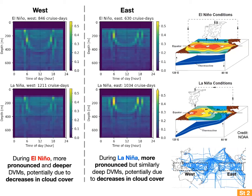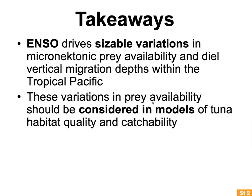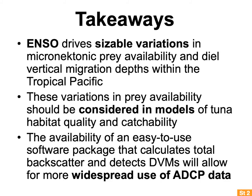In the eastern tropical Pacific, during La Niña, more pronounced though similarly deep DVMs occur — because it's less cloudy during La Niña in the east, allowing more sunlight through the water column, which would also drive more pronounced DVMs. In summary, story number two shows that ENSO drives sizable variations in micronectonic prey availability and diel vertical migration depths within the tropical Pacific. These variations in prey, just as with subsurface oxygen, should be considered in models of tuna habitat quality and catchability used in stock assessments.